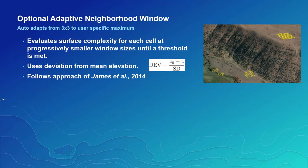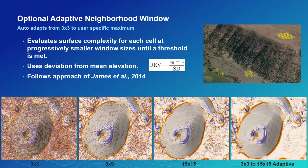In this approach, we estimate surface complexity for each cell at progressively smaller window sizes until a threshold is met. The metric used is deviation from mean elevation following the approach of James. Building on the graphic on the previous slide, the adaptive window is on the far right, and you can see it retains details of the key surface features and is quite effective to further minimize noise. We'd like to acknowledge Dave James and team from USDA who was quite helpful in evaluating and implementing their idea into ArcGIS.